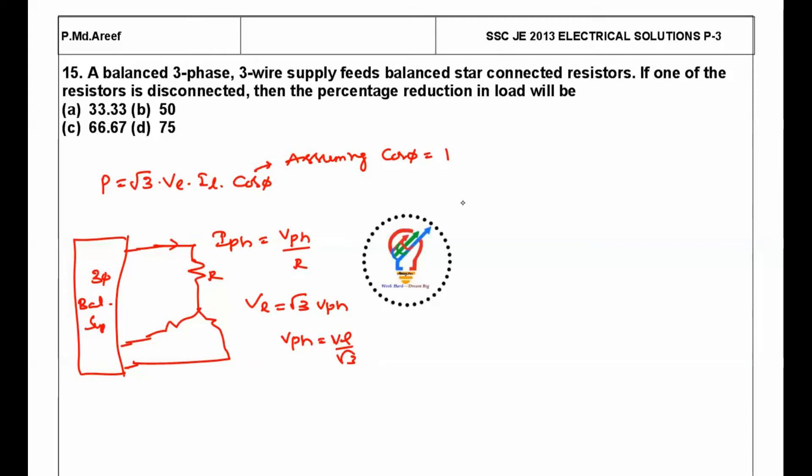If you substitute this value in the equation, P equals root 3, VL is VL only, and IL is VL by root 3 into R. Root 3 gets cancelled, so VL square divided by R.